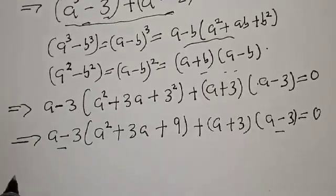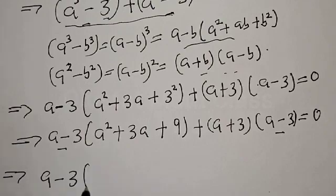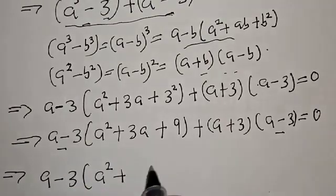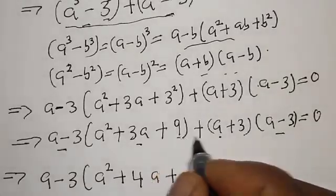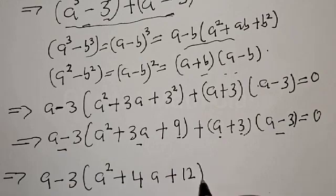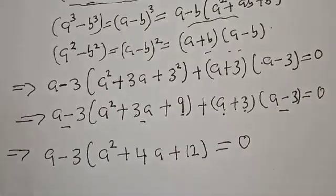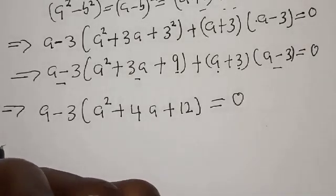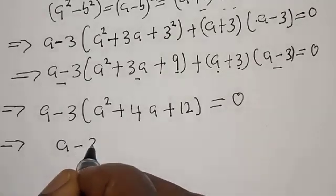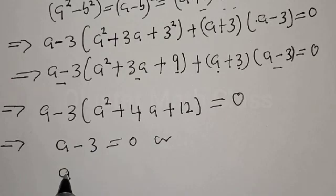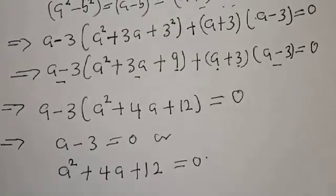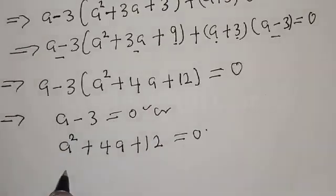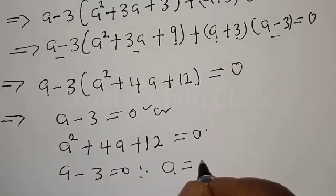We have A minus 3 common in both terms. Factoring out gives us A minus 3 times the quantity A square plus 3A plus 9 plus A plus 3, which simplifies to A minus 3 times A square plus 4A plus 12, equal to 0. From this part, A minus 3 equal to 0, therefore A equal to 3.